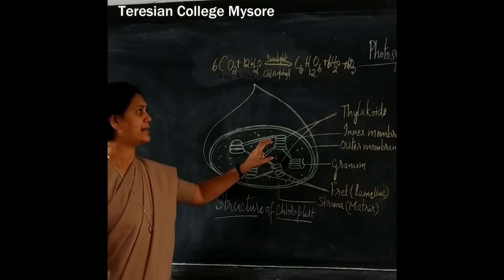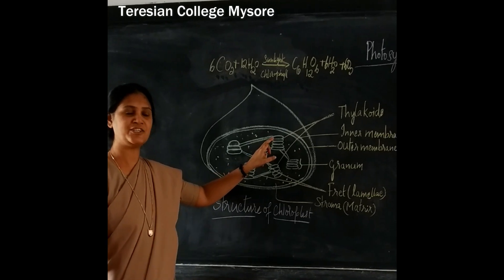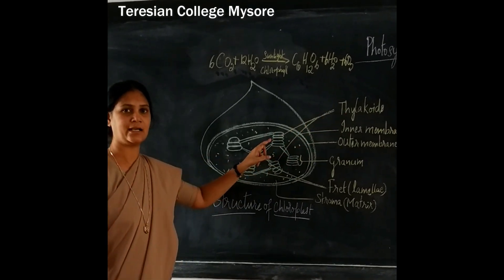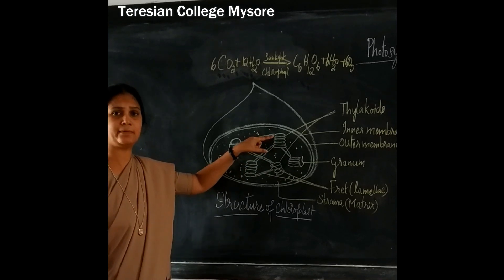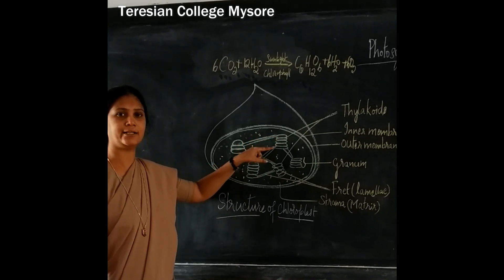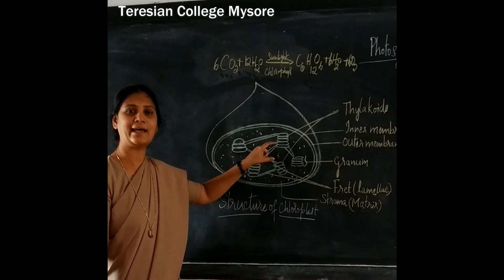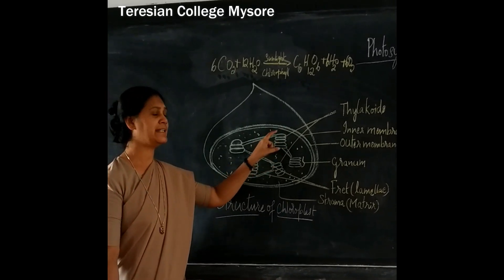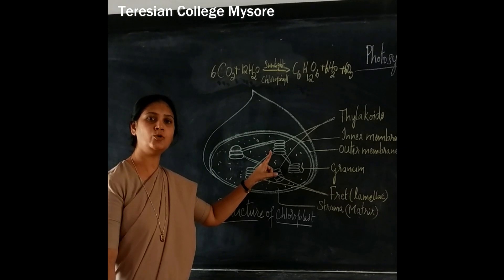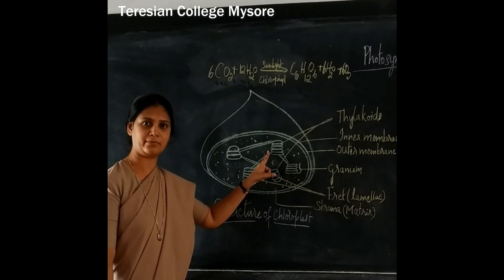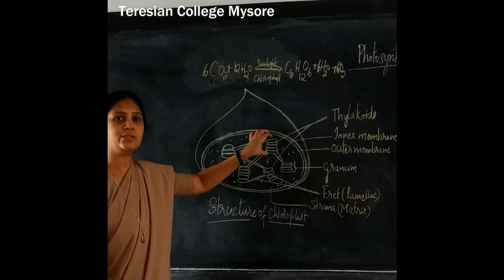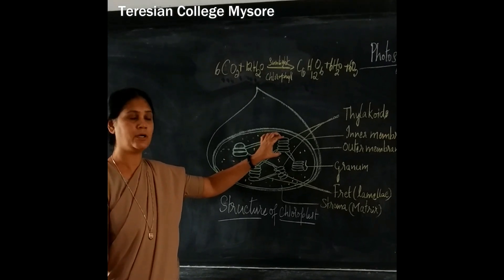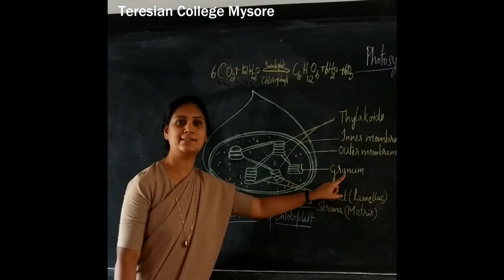Inside the stroma, there are a number of coin-shaped thyloplasts present. These thyloplasts are placed one above the other, forming a pine-like structure. The entire thyloplasts are formed by thyloplast membrane.